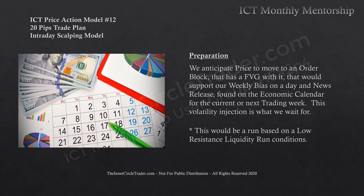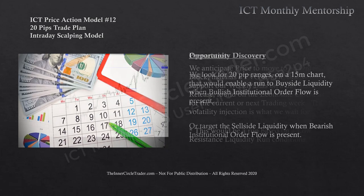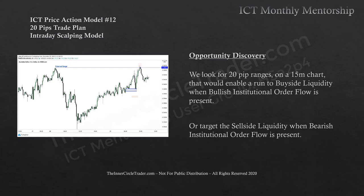We anticipate price to move to an order block that has a fair value gap with it, supporting our weekly bias on a day and news release found on the economic calendar for the current or next trading week. This volatility injection is what we wait for — a run based on a low-resistance liquidity run condition. For opportunity discovery, we look for 20-pip ranges on a 15-minute chart targeting buy-side liquidity when bullish institutional order flow is present, or sell-side liquidity when bearish. We use the kill zones with a fair value gap and order block.